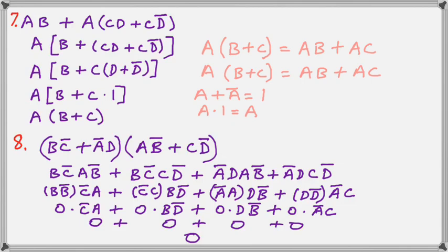Now for question nine we have to multiply out the brackets completely, which is multiplying BC bar by AB bar, then BC bar by CD bar, then A bar D by AB bar, and lastly A bar D by CD bar. That's what we call multiplying out brackets, and it's actually using the distributive rule. It's just that the terms are a little more complicated.